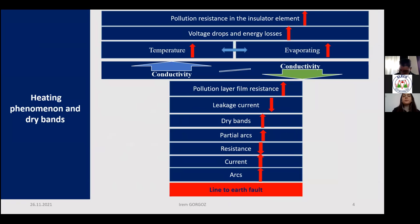Under these two opposite effects, evaporation becomes more effective, the pollution layer film resistance increases, and the leakage current decreases. Heat repeatedly expands to form dry bands, and partial arcs occur. These arcs decrease the resistance in series with arcs; the current increases and allows the arcs to bridge even more of the insulator surface. Eventually, the arcs fully spread over the insulator surface and the line-to-earth fault occurs.